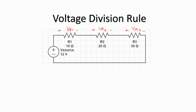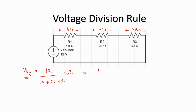Let's solve this circuit to find Vr2. Vr2 would be the total voltage divided by the sum of resistances — 10 plus 20 plus 30 — multiplied by the resistor across which we want to find the voltage drop. Since R2 is 20 ohms, Vr2 is 12 into 20 divided by 60, which gives 4 volts.